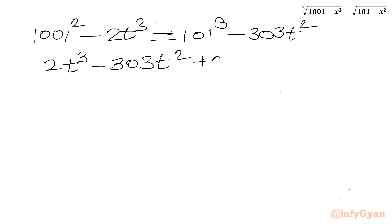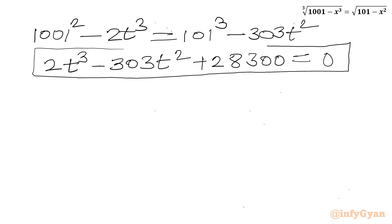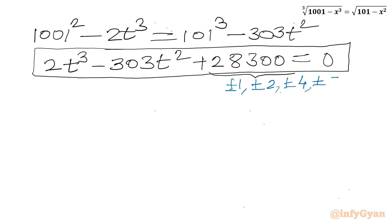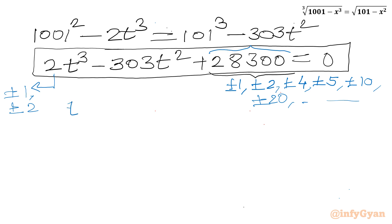After simplification, we get a cubic equation equal to zero with a constant of 28300. I will use the method of synthetic division and the rational root theorem. So let us find the eligible factors of 28300: plus or minus 1, 2, 4, 5, 10, 20, 25, and so on. For the leading coefficient I can write only plus or minus 1, plus or minus 2. Because 28300 is a very large number, plugging in t equal to 1 won't give us zero.